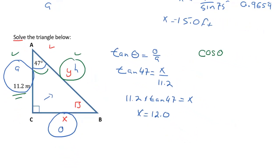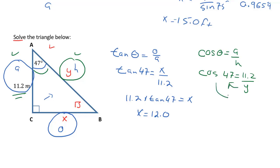So cosine of theta is going to equal adjacent over hypotenuse. Plugging in what I know, I get cosine of 47 degrees is going to equal 11.2 over y. Doing my cross multiplying, y moves up to the top, and cosine of 47 moves to the bottom on the other side. I get y equals 11.2 over cosine of 47.